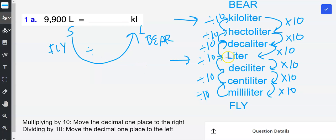And let's think about what I'm going to divide by. So I'm going from the liter all the way to the kiloliters, and so I'm going to jump once, twice, three times. So that means I'm dividing by ten once, twice, three times. And dividing by ten three times is the same as dividing by one thousand.